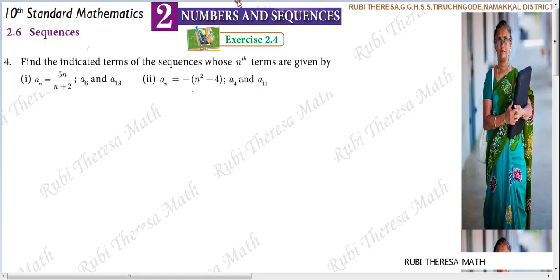Welcome. Exercise 2.4, fourth sum: find the indicated terms of the sequences whose nth terms are given. So the nth term is defined as a(n) equals 5n divided by (n plus 2).